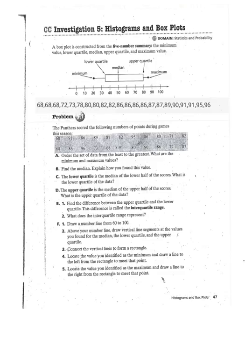Our minimum value is our least number, which is 68, and our maximum is our greatest, which is 96. For part B, they want you to find the median. Explain how you found this value.